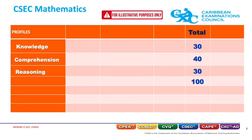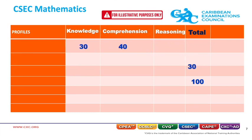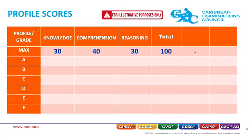Now let us convert the profiles column to a row, then convert the total column to a row. The total column now becomes the maximum score for each profile. Each profile has letter grades A to F in the case of CSEC. Let us change the word 'total' to 'composite,' which is a preferred term by CXC at grading. CSEC has a 6-point grading system, grades 1 to 6. Each grade band within each grading system has a specific cut-off point.